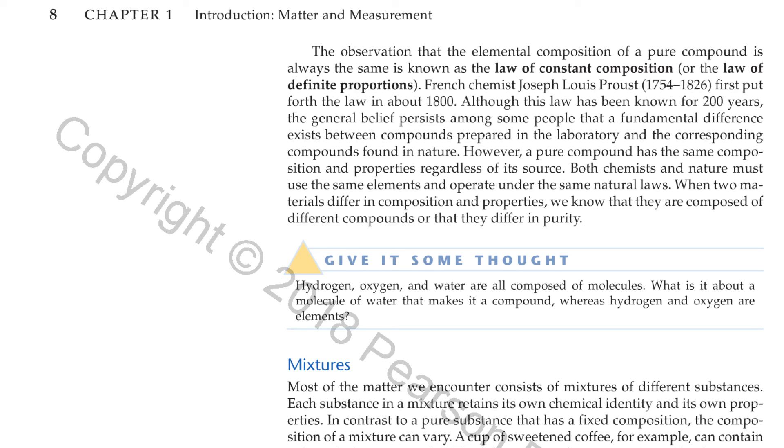However, a pure compound has the same composition and properties regardless of its source. Both chemists and nature must use the same elements and operate under the same natural laws. When two materials differ in composition and properties, we know that they are composed of different compounds or that they differ in purity.